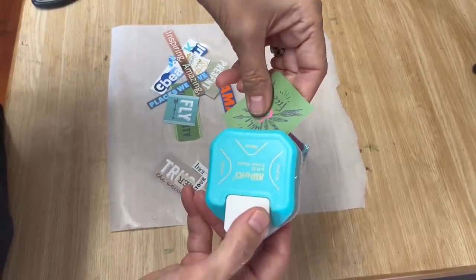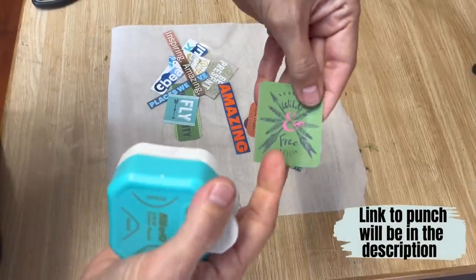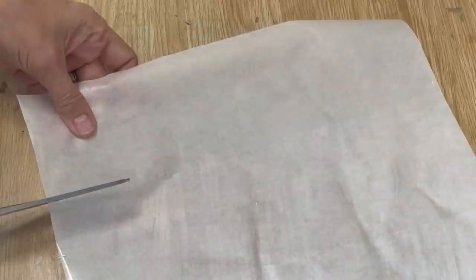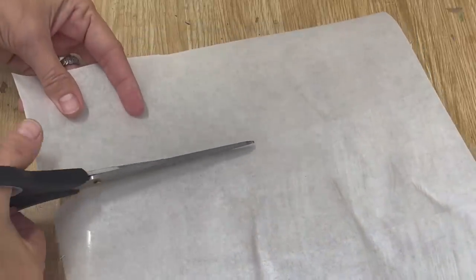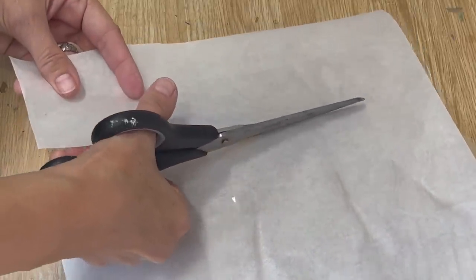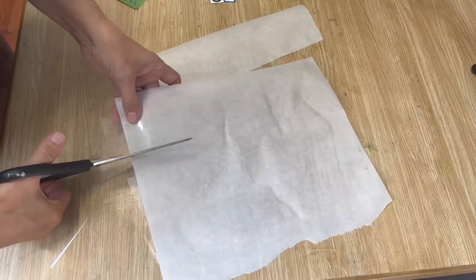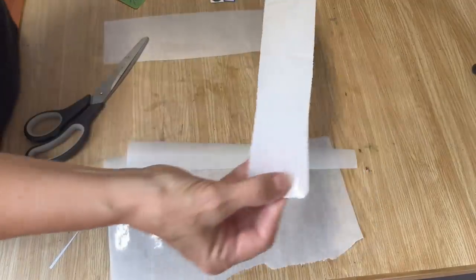I have this punch that I love to use on the little pieces of paper that I cut out for this project. It just rounds them off and makes them look a little bit nicer. Now I'm gonna cut the strips of packing tape off of that parchment paper.